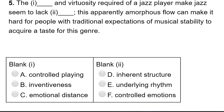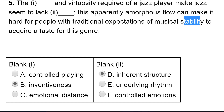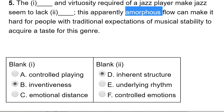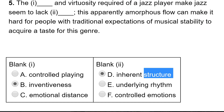Structure or rhythm? I'm going to go with structure, not rhythm — first because I think jazz does have some rhythm, but also because structure is a synonym of stability. Stability and structure are closely related, which makes me think they want 'structure' rather than 'rhythm.' Double-checking: the inventiveness and virtuosity required of a jazz player make jazz seem to lack inherent structure — it's apparently amorphous. So it's also the opposite of amorphous: if something is amorphous, it lacks shape and structure, not necessarily rhythm. I'm confident with inventiveness and structure.